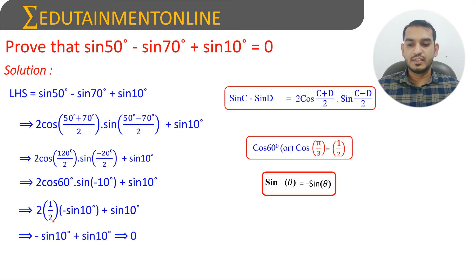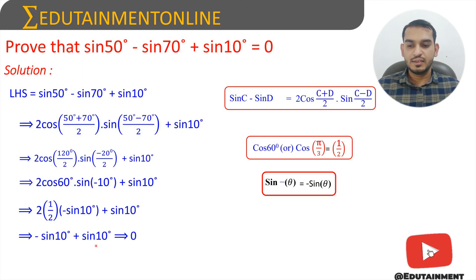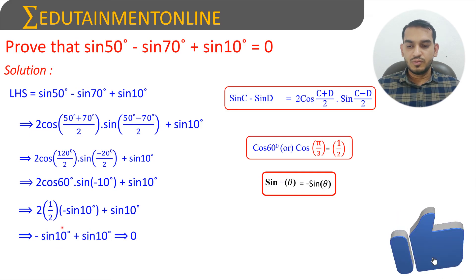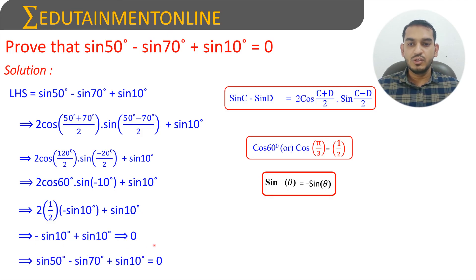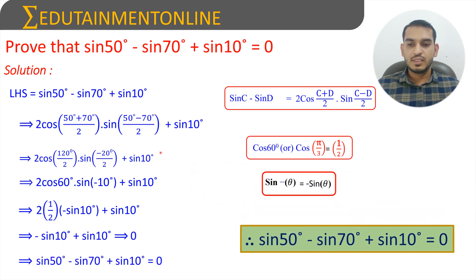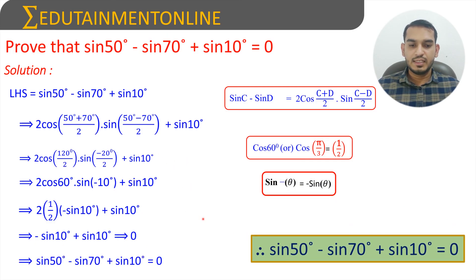The 2 and 2 cancel, leaving minus sin 10 degrees plus sin 10 degrees. These two cancel each other, giving 0. Therefore, sin 50 degrees minus sin 70 degrees plus sin 10 degrees is equal to 0.